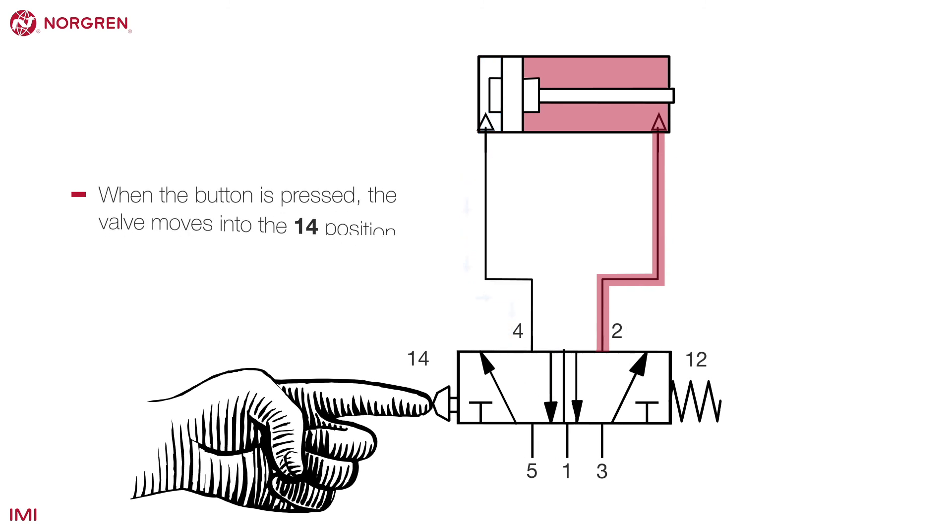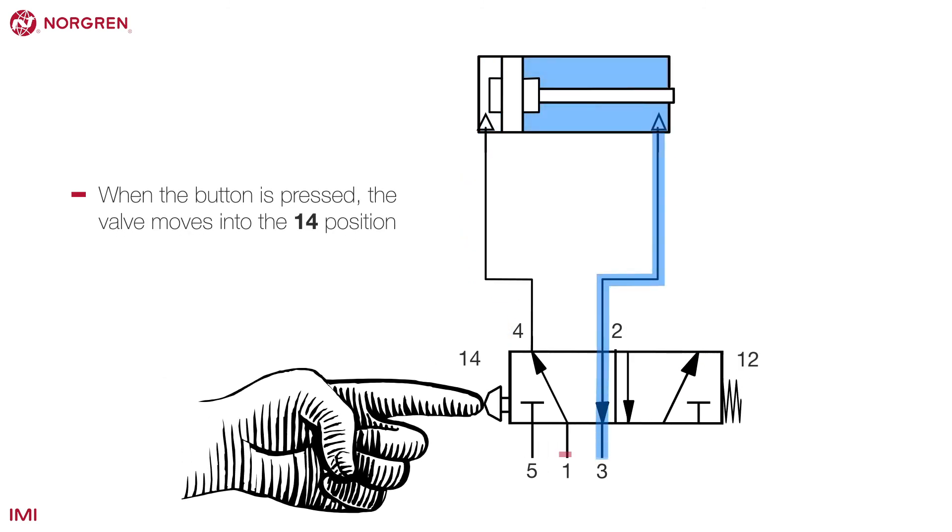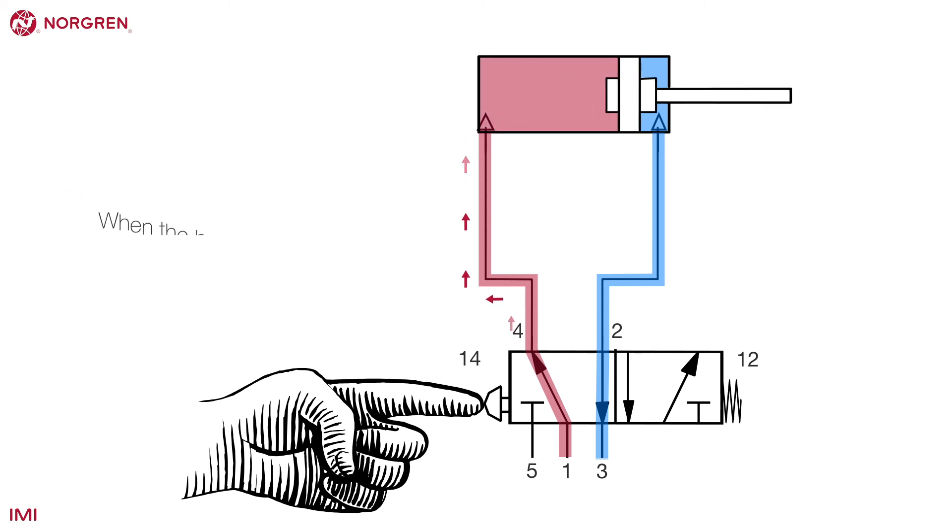When the button is pressed, the valve moves into the 1-4 position. Air now travels from port 4 of the valve to the back of the cylinder, pushing it forwards. The air at the front of the cylinder now passes back through port 2 and out of the exhaust at port 3.